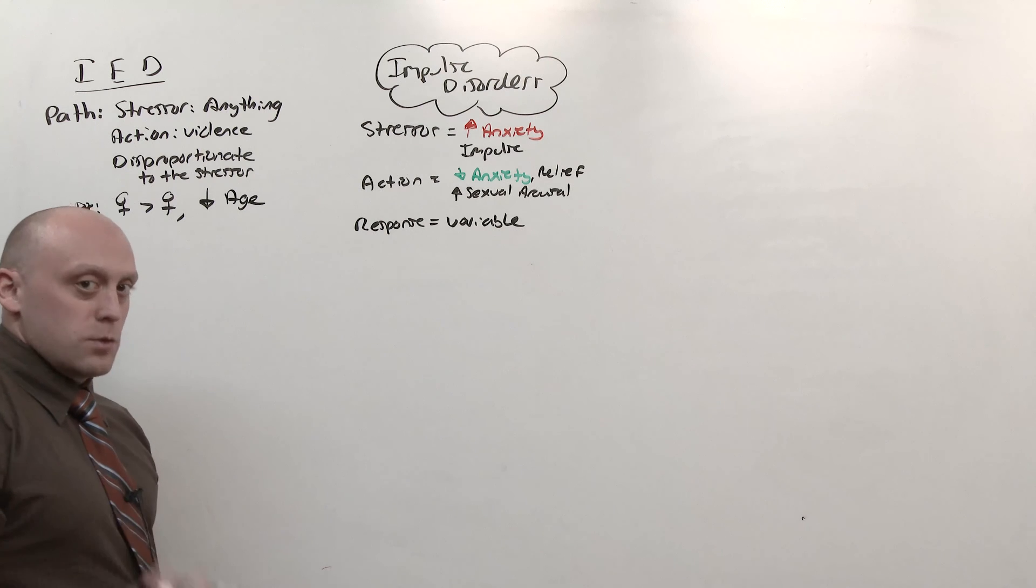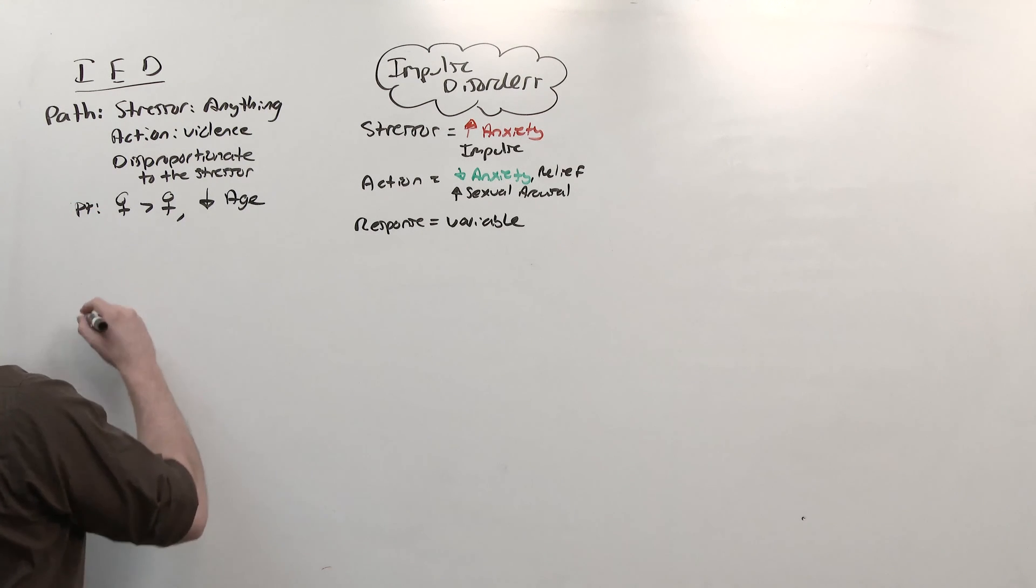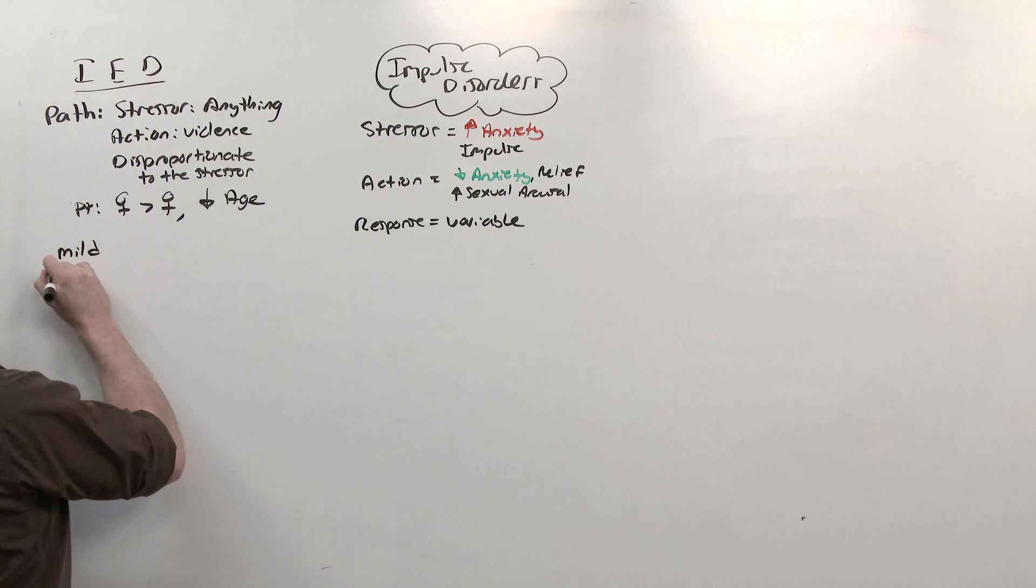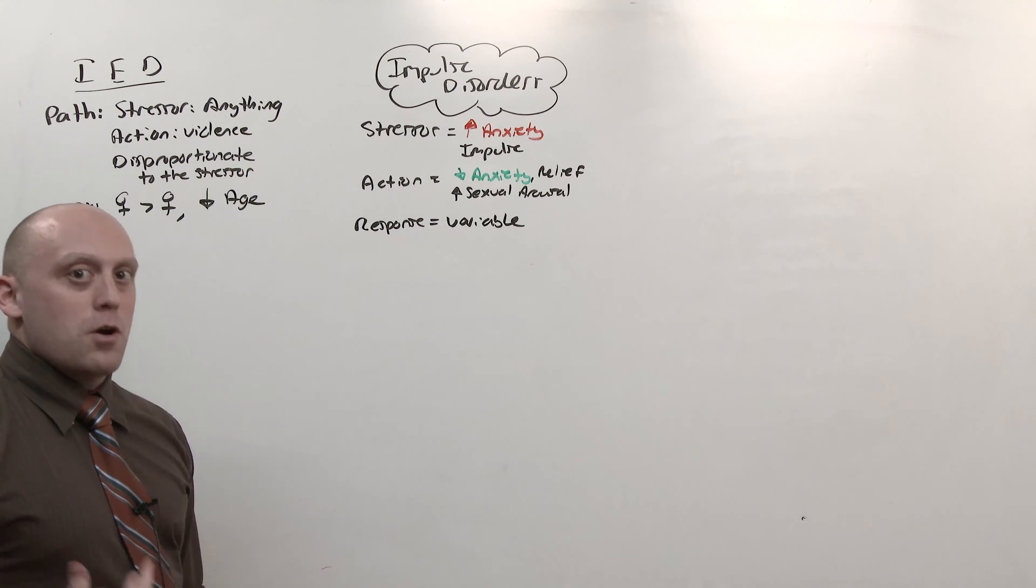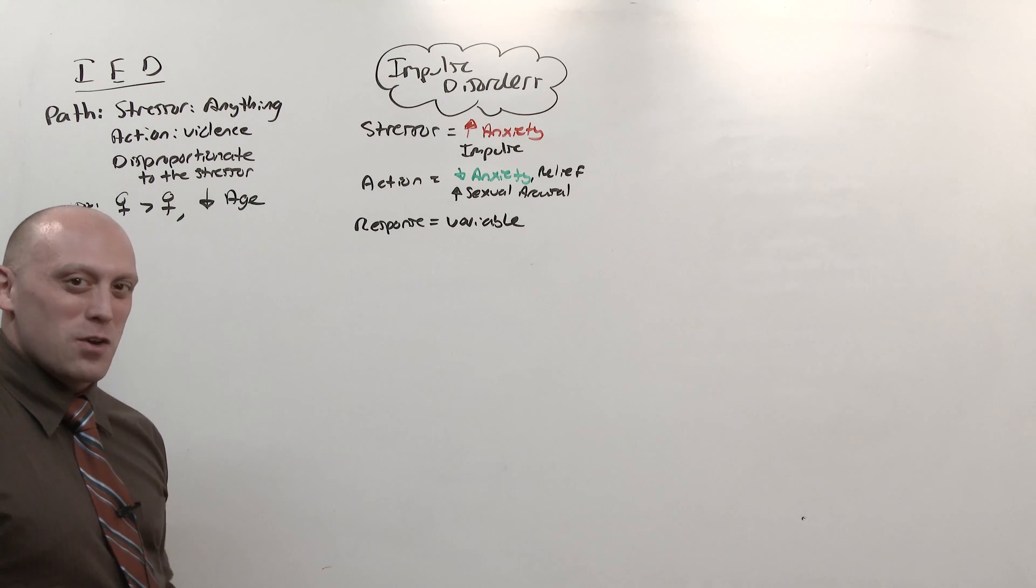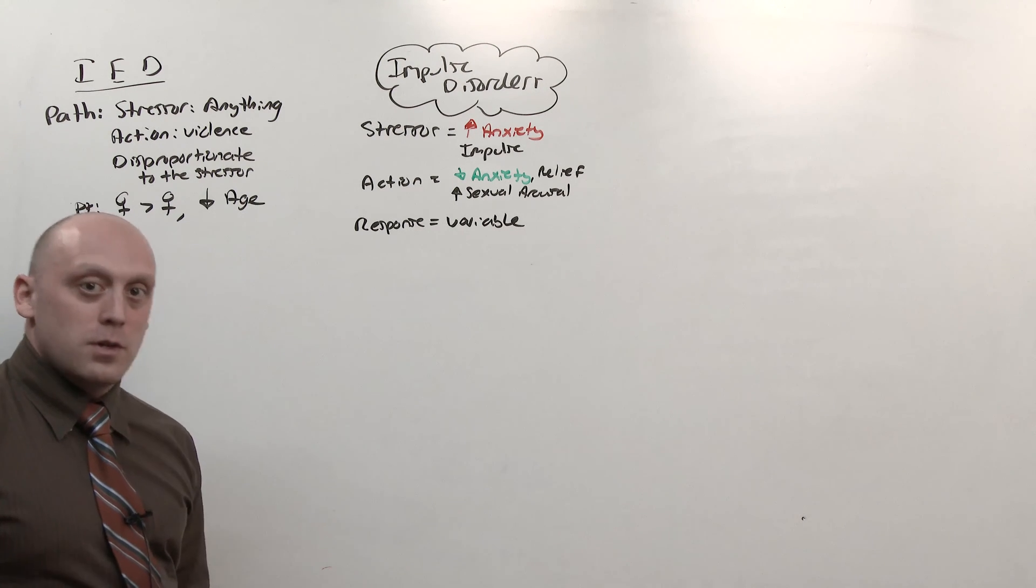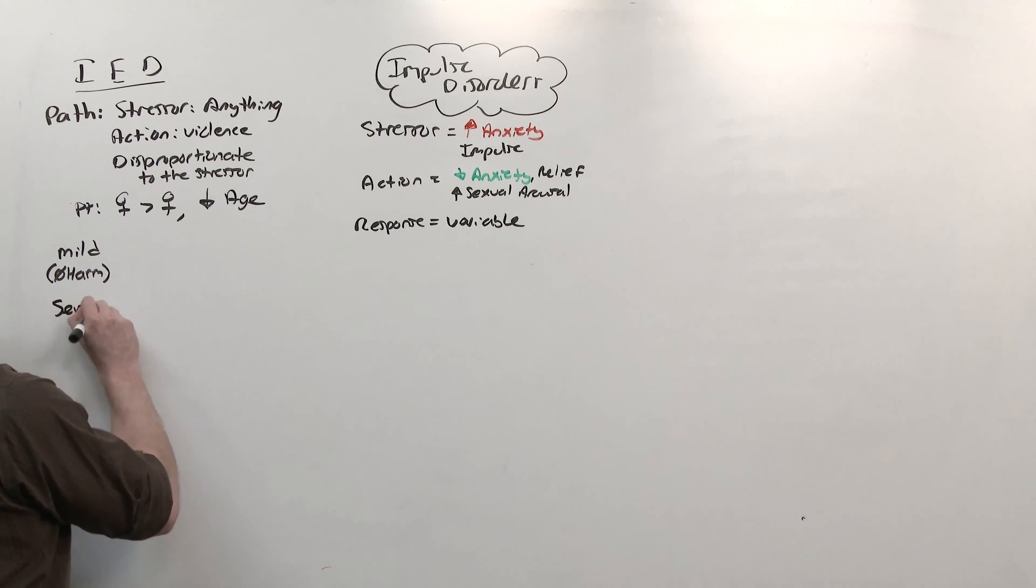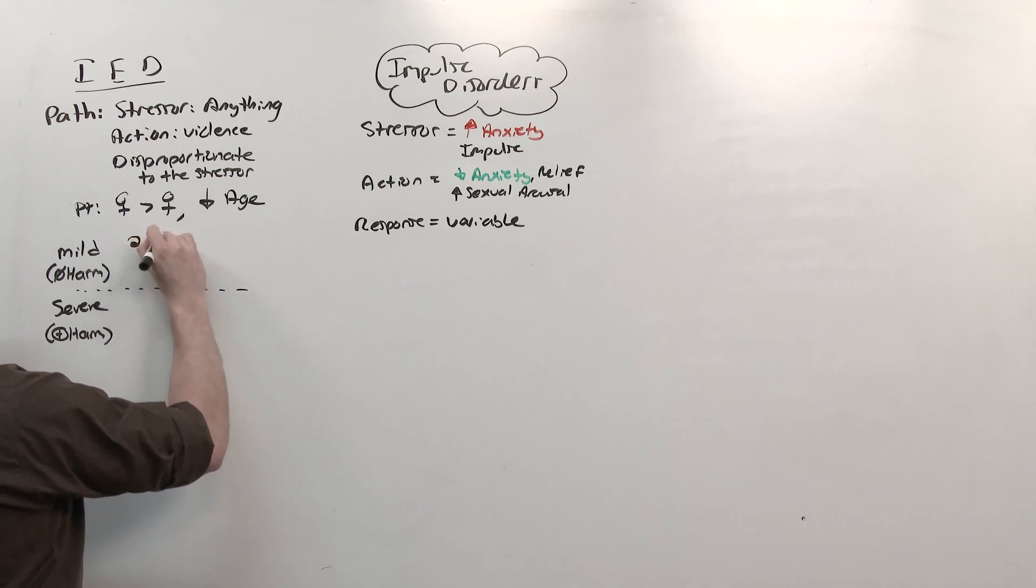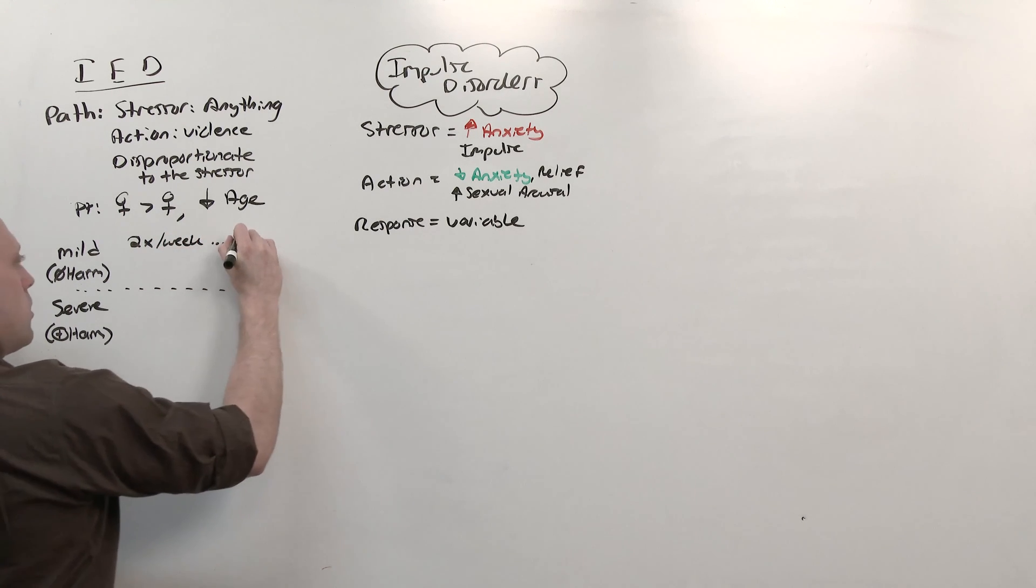But there's a timing associated with it. And there's two forms. There's the mild form, which involves no harm. And harm really means to a person, or to a living creature. Harm to an object, not so much, but the severity of the injury, like bulldozing a house with a tractor, might be seen as harm. And there is severe. And in severe, there is harm. In the mild form, if no harm is involved, you should see two outbursts per week that continue for three months.